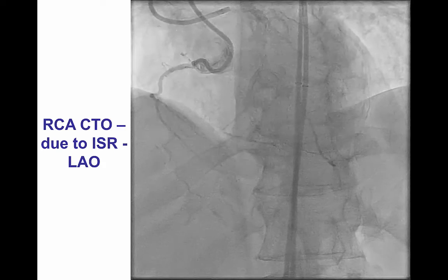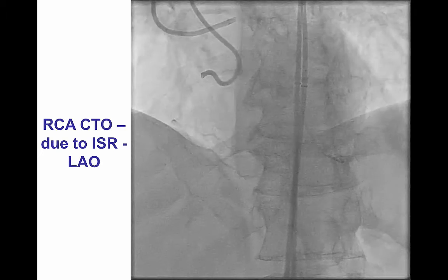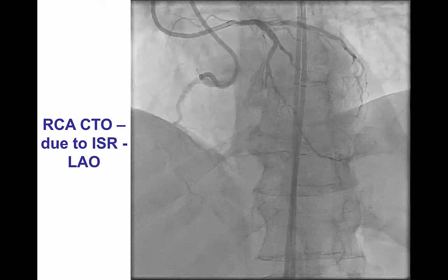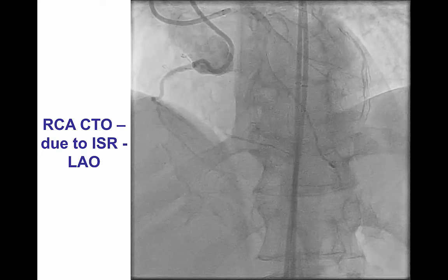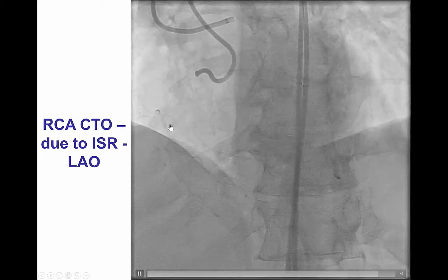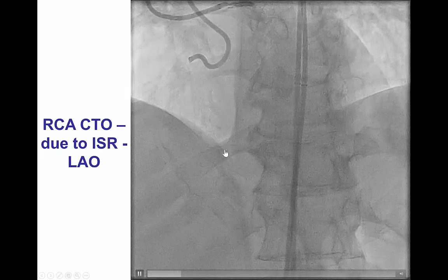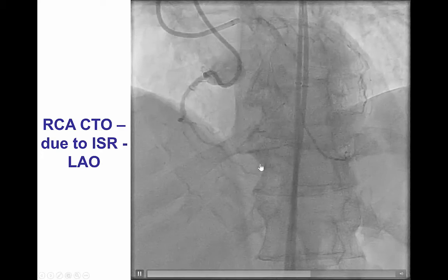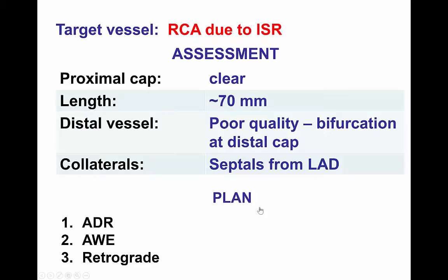This was a patient with single-vessel CTO of the right coronary artery that was due to in-stent restenosis. It was a fairly long occlusion from the mid-RCA all the way to the crux in the PDA-PLV bifurcation. It had a clear cap, it was fairly lengthy, and there were some collaterals coming from the LAD.